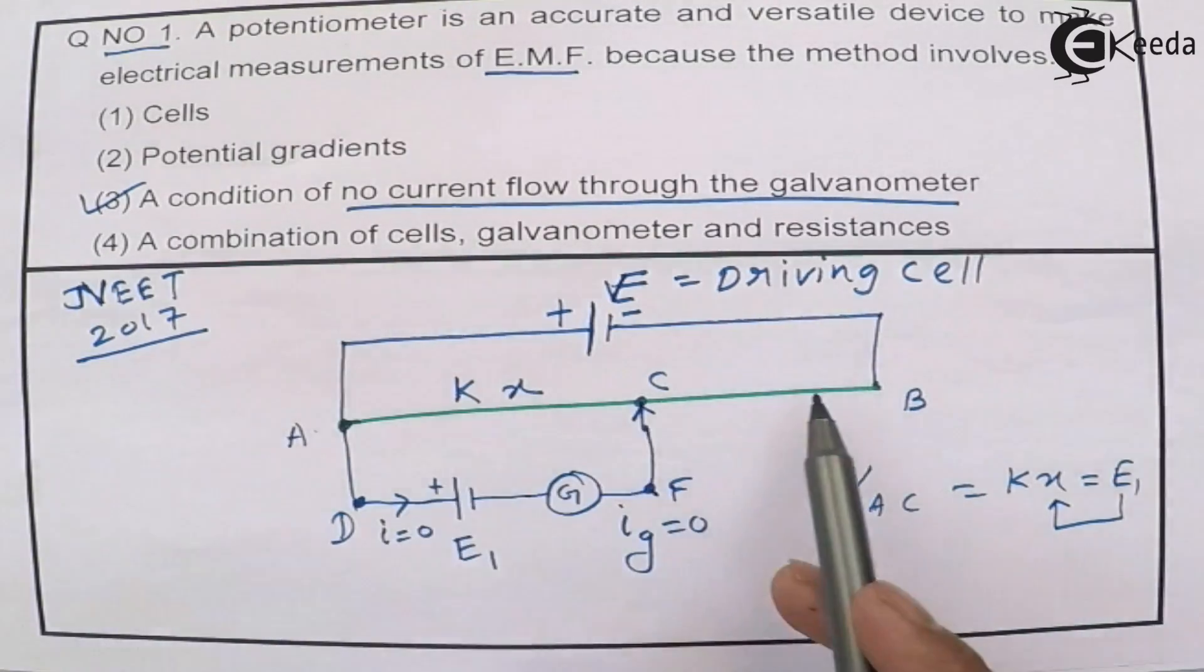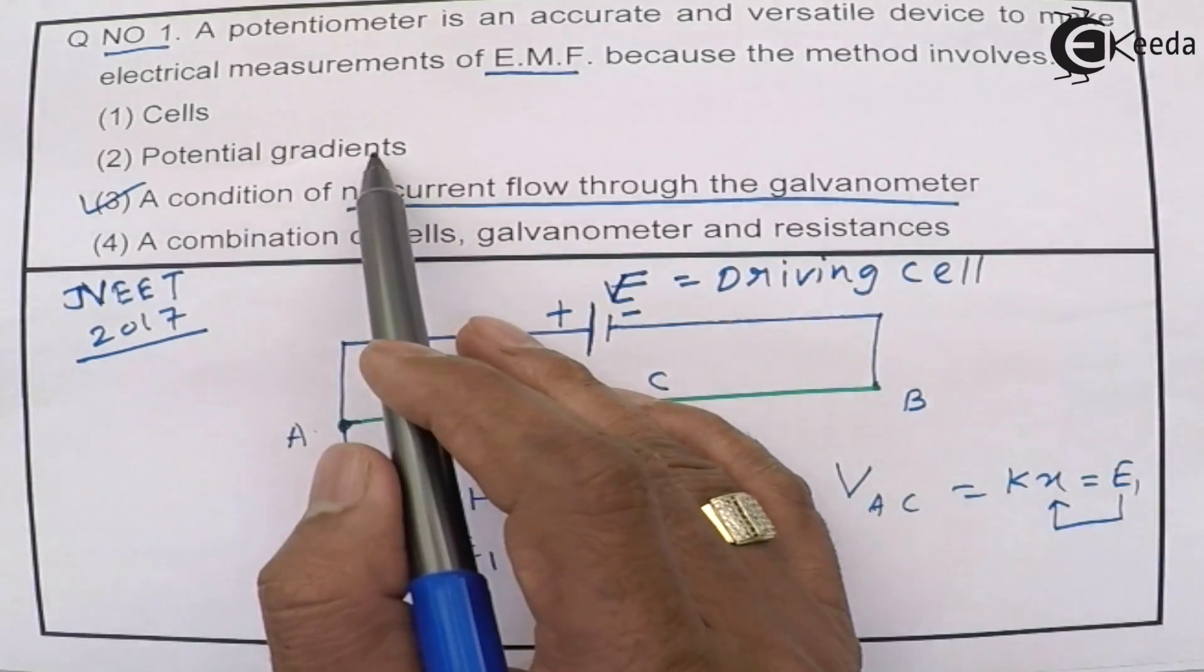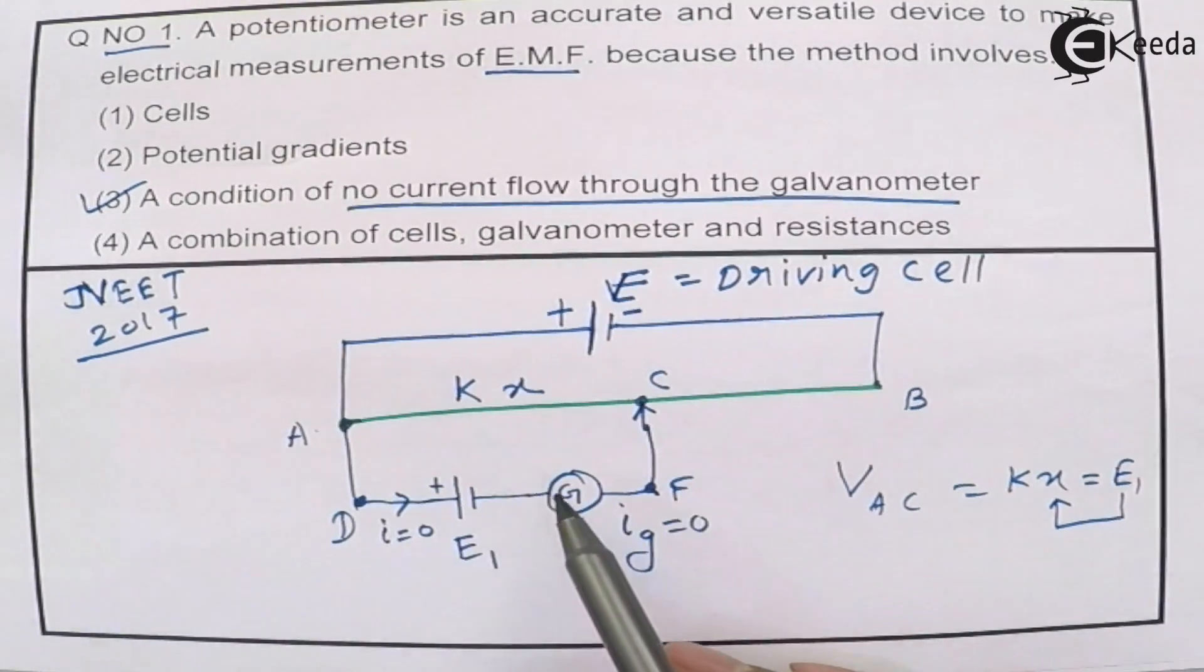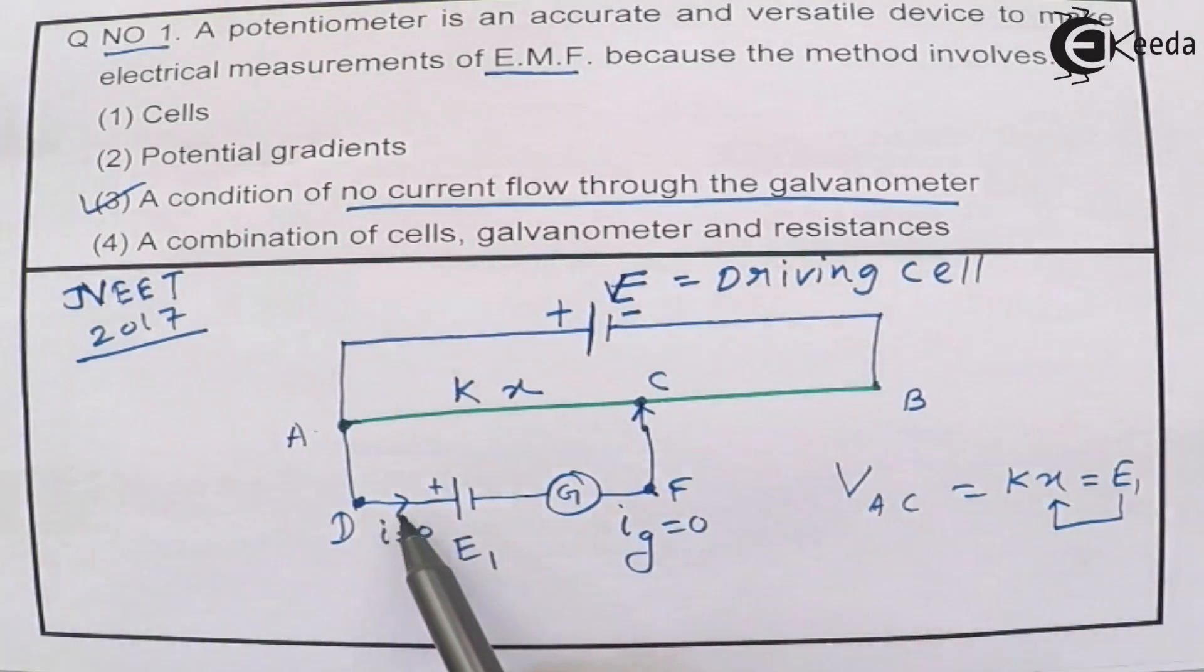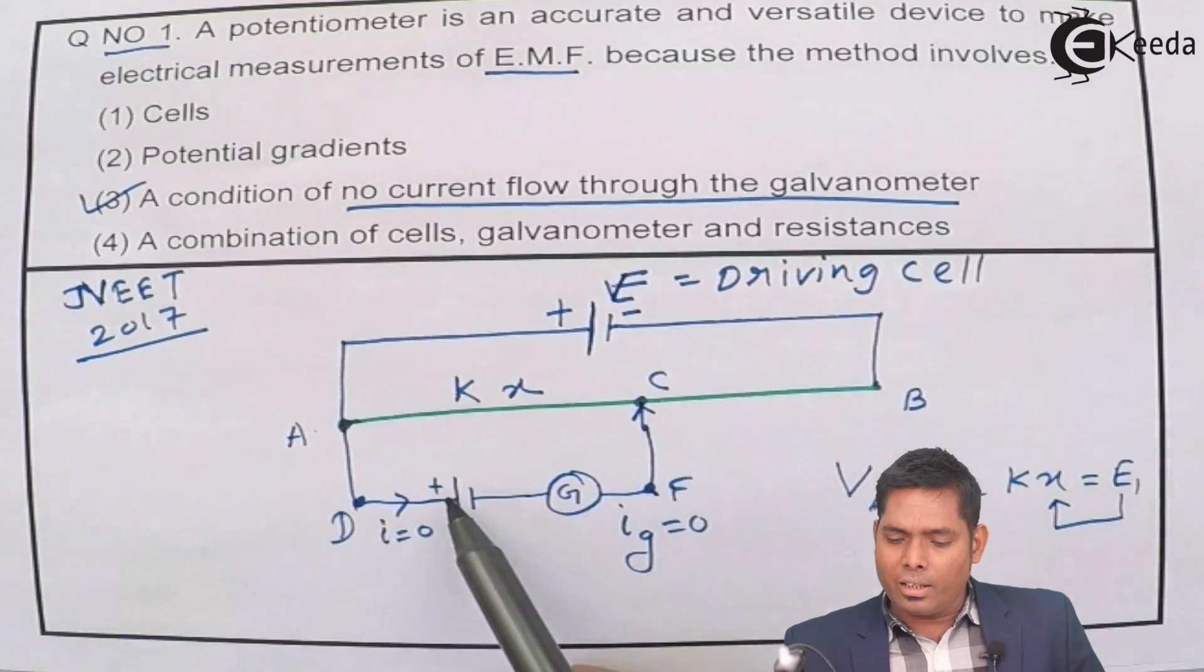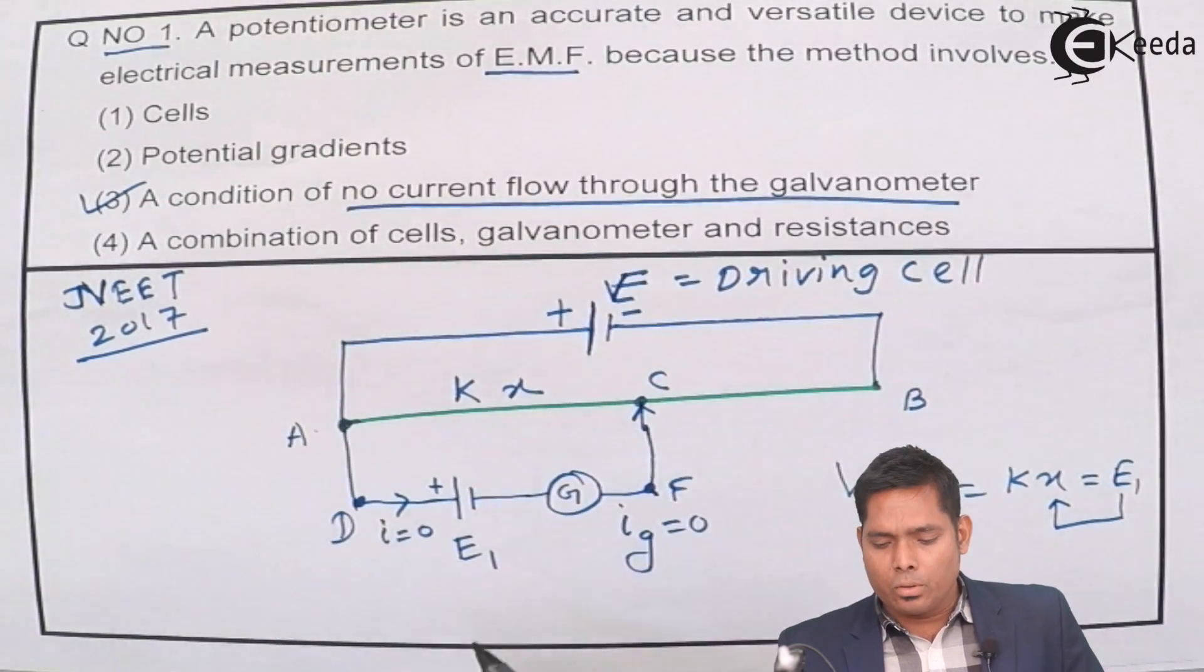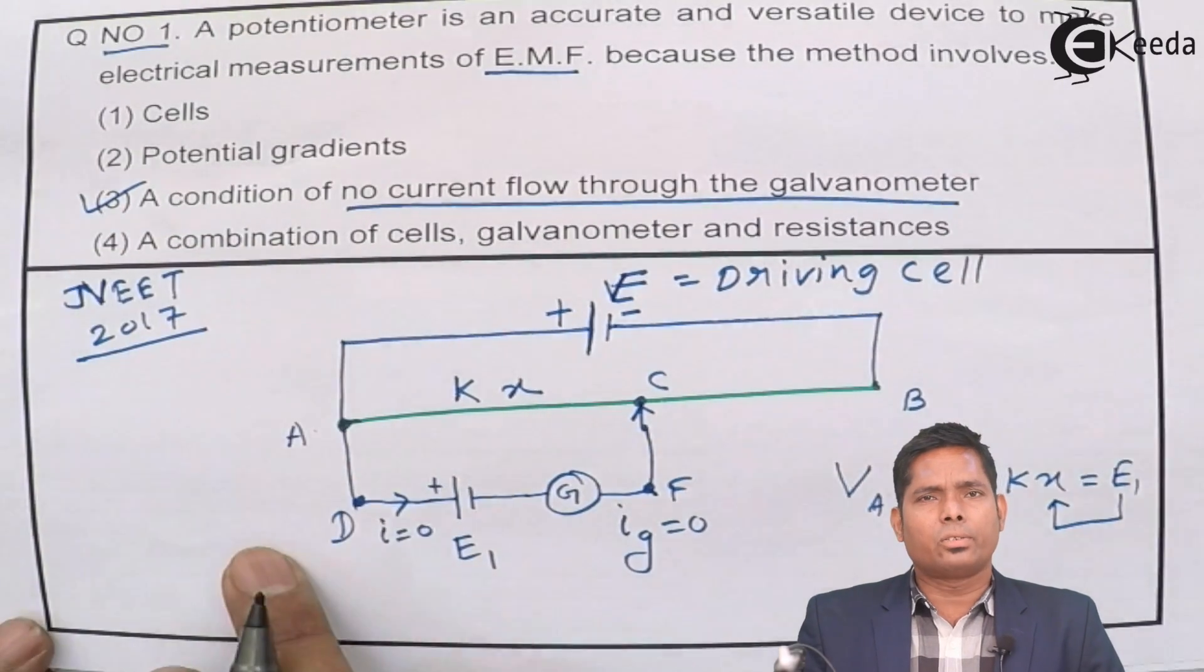So even if there is a potential gradient in the wire. So this potential gradient cell is not responsible. It is the condition that the current should not flow because this current doesn't flow through the galvanometer. In fact, the cell then that will measure the EMF of the cell. So the correct answer to this question is option number three.